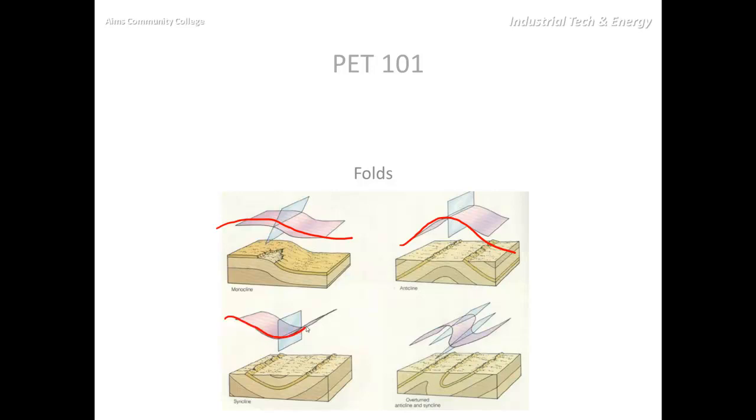You could also have a syncline. Here's how I tell them apart, or here's how I remember them. An anticline comes up, kind of bulges up, sort of like an anthill. And a syncline has a bowl-shaped feature to it, sort of like a sink.